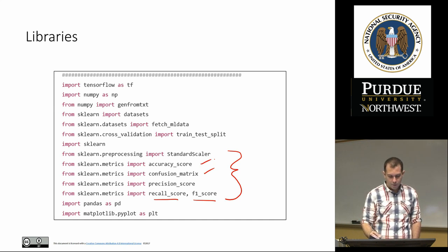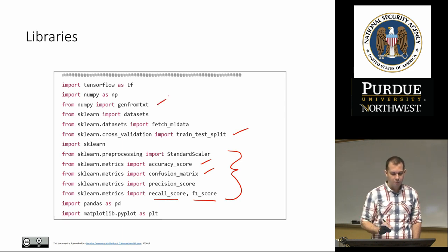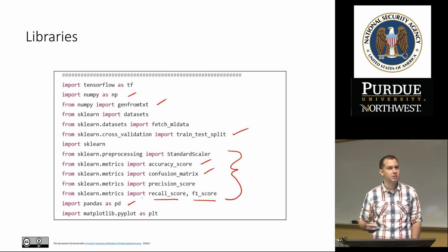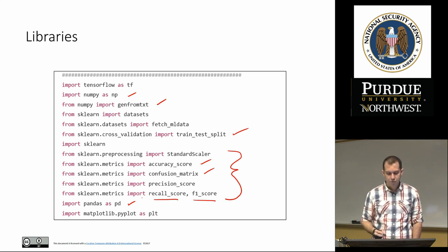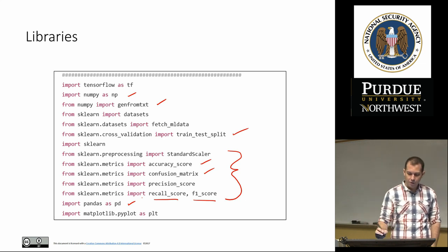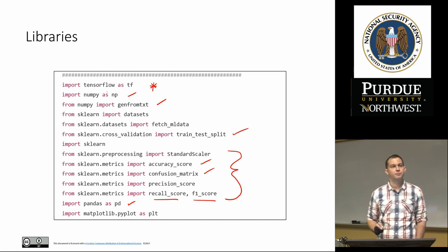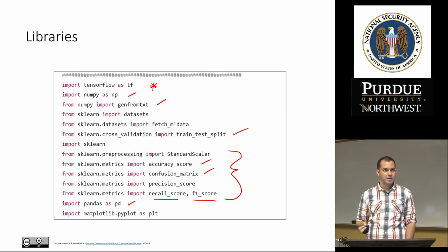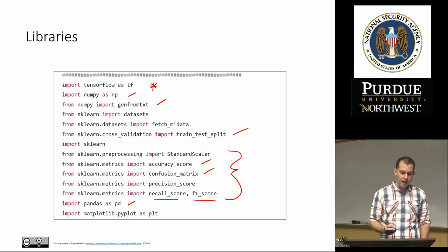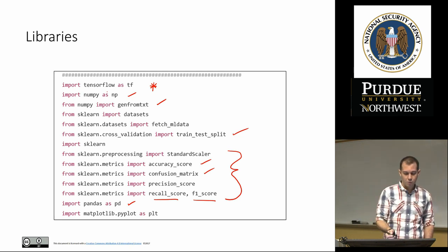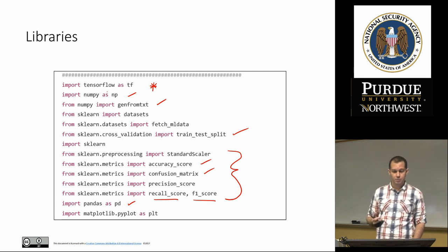Additionally we have train_test_split, a function for reading in our data, numpy, and pandas — these are usually the libraries you will see whenever you are doing machine learning. The key new aspect is that now we have introduced the TensorFlow library: import tensorflow as tf. Adding this one statement brings in everything we need for deep learning.